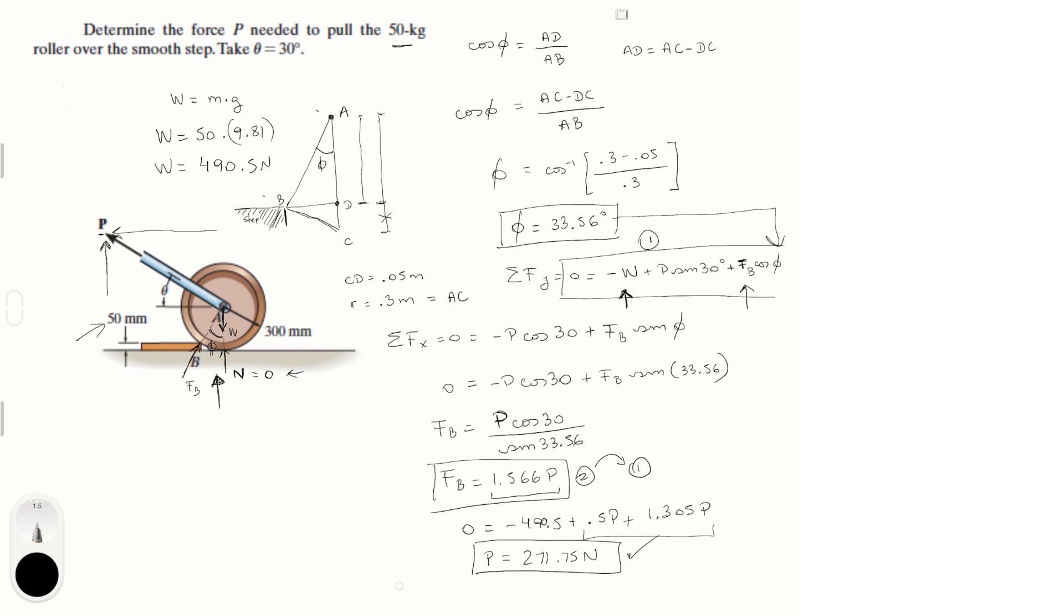And this is the force needed for P to roll over this smooth step. Now, if they ask you also for F of B, it's pretty easy. Just plug this into equation 2 right here. And you should get that F of B is equal to 425.56 Newtons. So, final answer for P. Final answer for the normal at B.